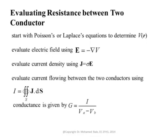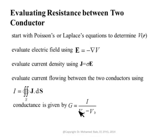Next, apply E = −∇V to get the electric field everywhere between the two conductors. Due to finite conductivity, this field creates a current density J = σE. Ideally J should be zero, but conductivity is usually very small rather than exactly zero. Once we have J, we integrate over the surface surrounding the positive conductor to get the total current. The conductance is then G = I / (Va − Vb), where Va is the voltage of the positive conductor and Vb of the negative conductor. Most of the time the negative conductor is grounded, so Vb is assumed to be zero.